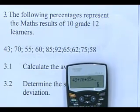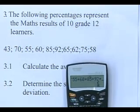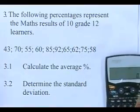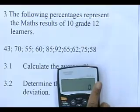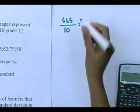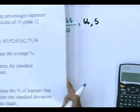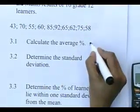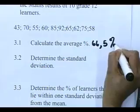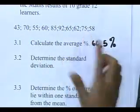So you go 43 plus 70, work with me students — 55 plus 60 plus 85 plus 92 plus 65 plus 62 plus 75 plus 58. You get a total of 665. Now we work out the average: 665 divided by 10, which gives you an average of 66.5. That is quite a good average percentage for 10 students.